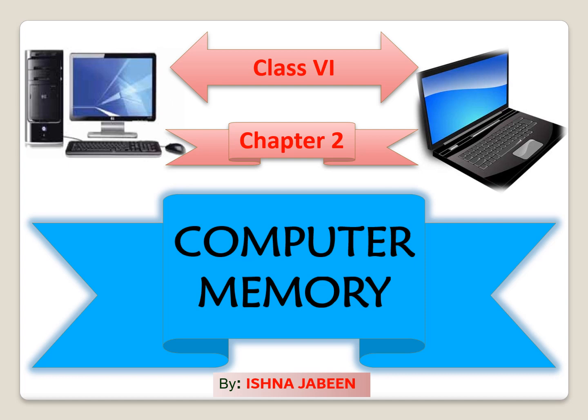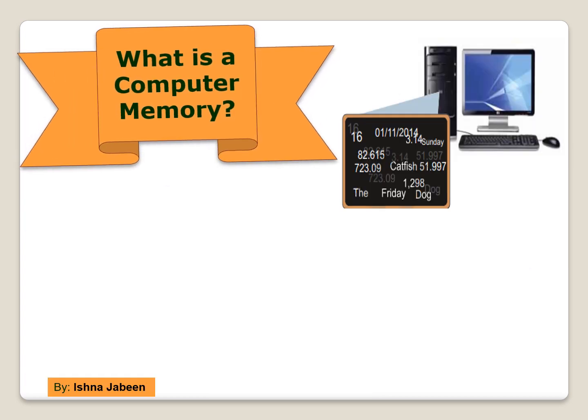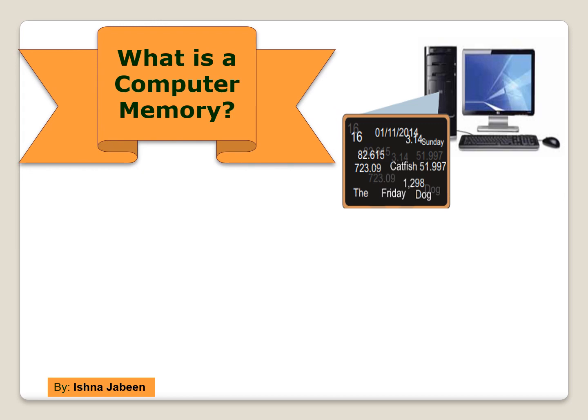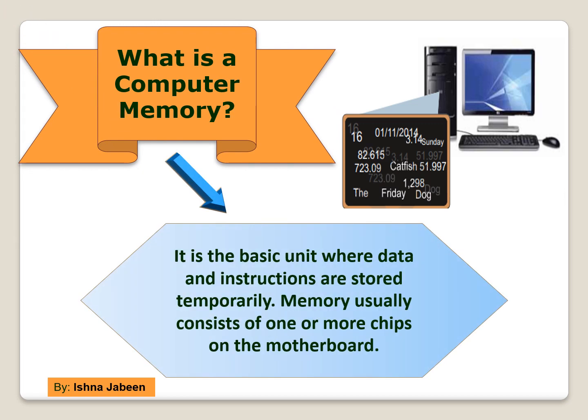Today we will study about computer memory. What is a computer memory? A computer memory is just like a human brain. It is the basic unit where data and instructions are stored temporarily. Memory consists of one or more chips on the motherboard. Computer memory is the storage space in a computer where data is to be processed and instructions required for processing are stored.